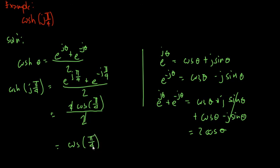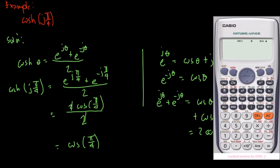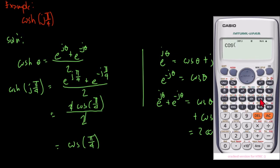We can cancel the 2, leaving cosine of π/4. We now use our calculator to get this value. We set the calculator to radians mode. Using the hyperbolic cosine identity, this is just cosine of π/4. The result is square root of 2 over 2, or 0.707.